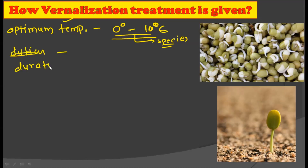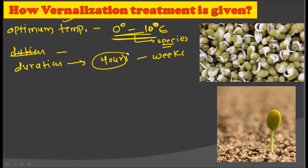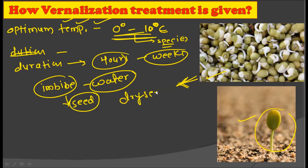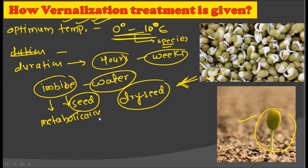Talking about the duration of vernalization: in the plant kingdom, this period varies from some hours to weeks. Some plants require only a few hours of chilling treatment, while some require weeks. In practice, we take seeds, seedlings, or germinating plants of nearly 10 days old and imbibe them in water. It is essential to imbibe the seeds in water because dry seeds cannot be vernalized — seeds must be imbibed and metabolically active for vernalization treatment to be effective.